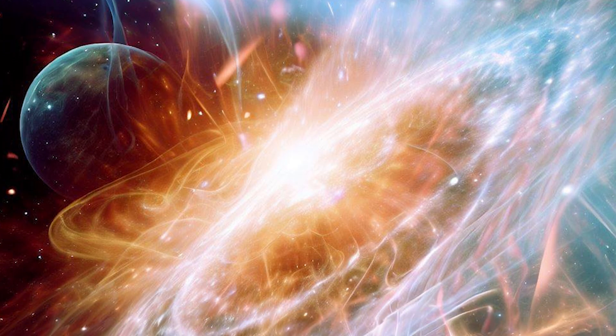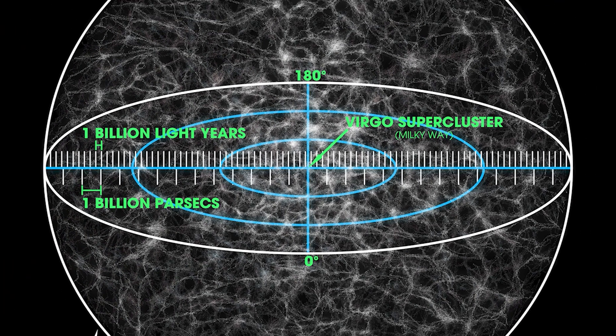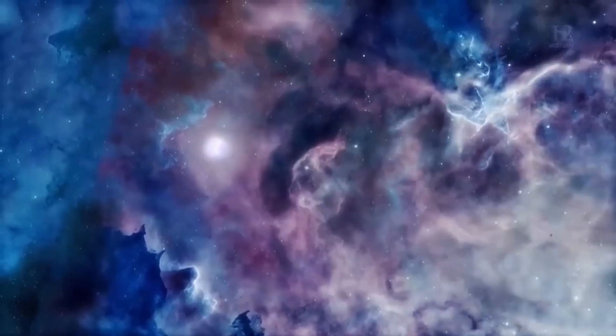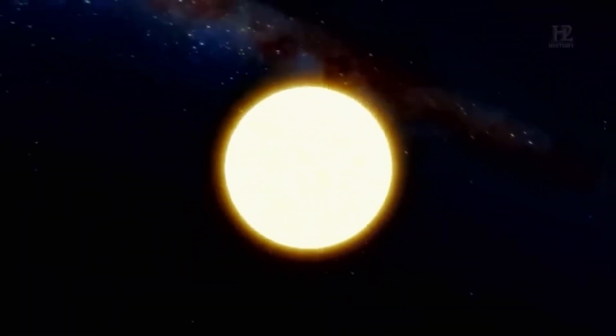The observable universe refers to the portion that we can detect from Earth. This region is limited and extends to a distance of approximately 93 billion light years in diameter. Light takes time to travel, so what we see in the observable universe are objects as they were in the past.